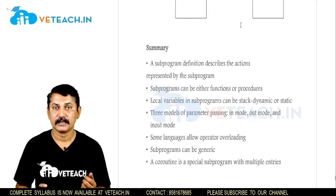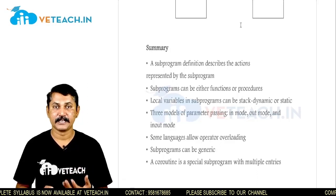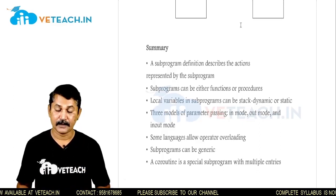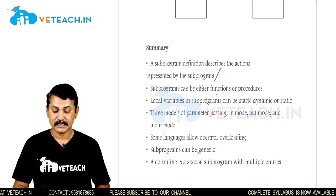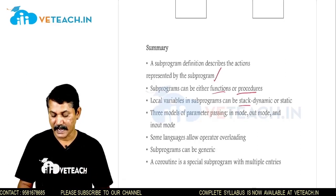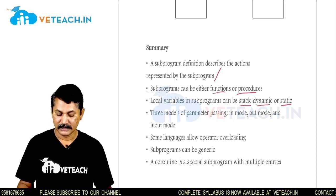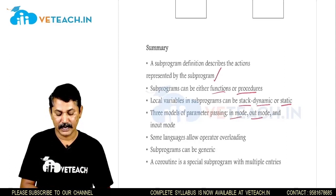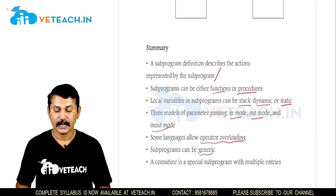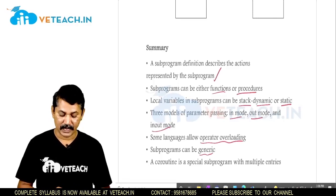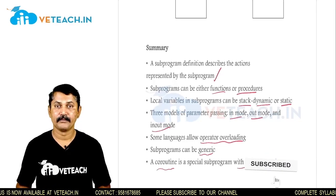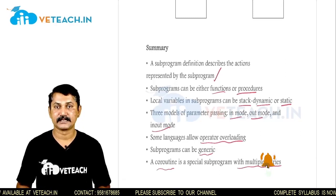To conclude the entire chapter: we covered coroutines and generic and overloaded subprograms. In this unit we studied: a subprogram definition describes the action of the subprogram and can be either a function or procedure; local variables can be stack-dynamic or static; three models of parameter passing are in-mode, out-mode, and in-out mode; some languages allow operator overloading; subprograms can be generic; and coroutines are a special subprogram with multiple entries in the same main program. Thank you, students — we will continue discussion in the next session.